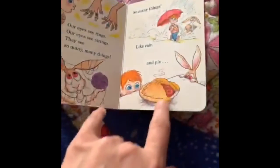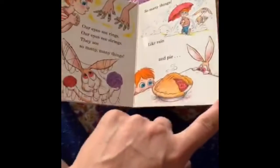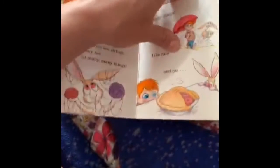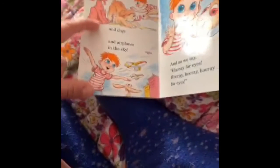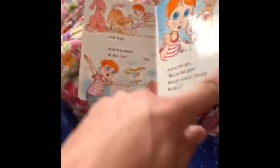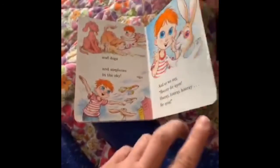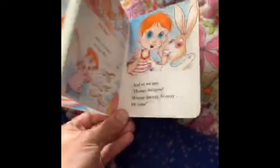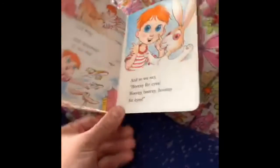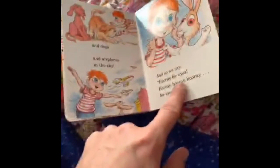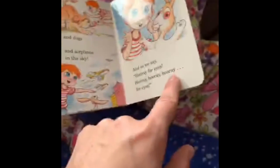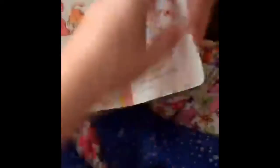So many things. Like rain and pie. And dogs, woof, woof, and airplanes zoom in the sky. And so we say, hooray for eyes. Hooray, hooray, hooray for eyes. The end.